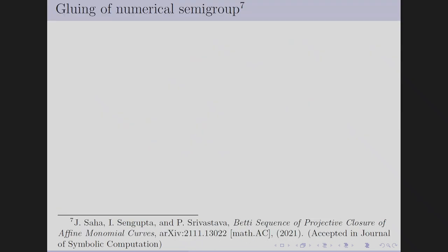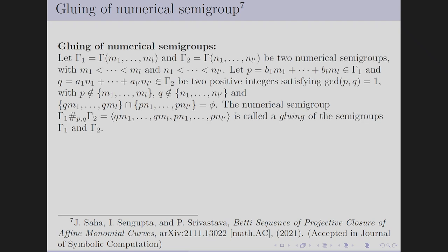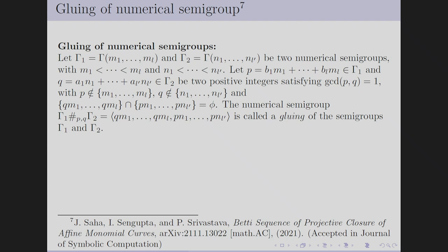Next, what is gluing of numerical semigroups? This technique is used for creating examples of local one-dimensional Gorenstein curves and complete intersection curves. Gluing is defined as follows: if Γ₁ and Γ₂ are two numerical semigroups minimally generated by given numbers, and P and Q are two non-generating elements from Γ₁ and Γ₂ respectively such that GCD(P,Q)=1, and we take the new numerical semigroup generated by Q·M₁,...,Q·Mₗ and P·N₁,...,P·Nₗ, then this semigroup is called the gluing of Γ₁ and Γ₂. Since projective closure need not be Cohen-Macaulay, we want to create examples using this technique where the projective closure is Cohen-Macaulay.